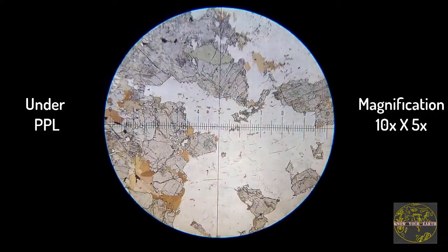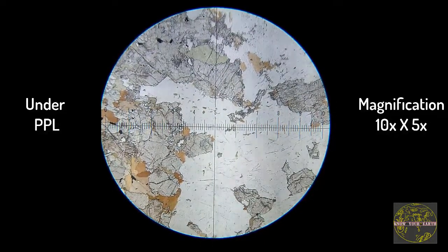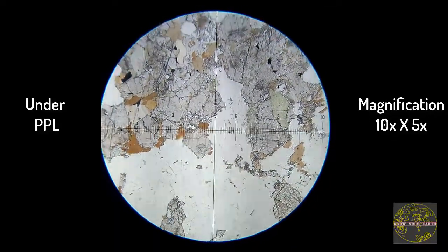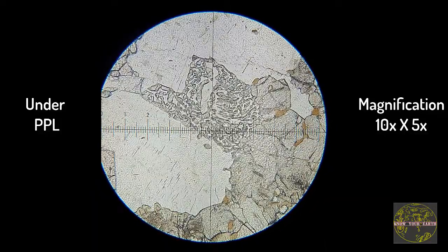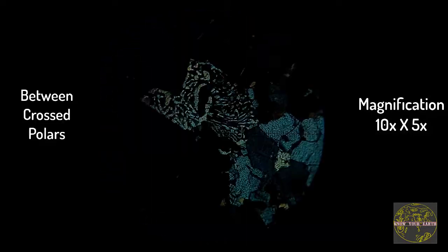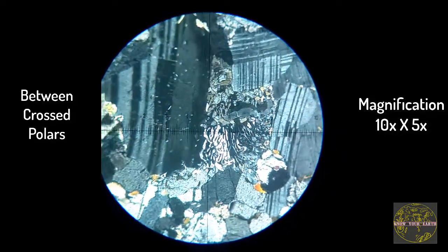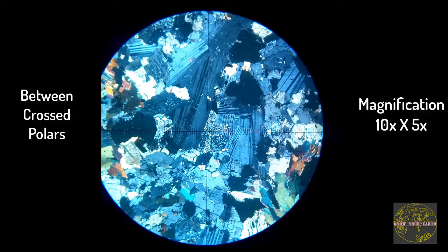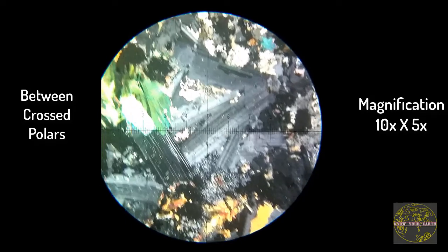This thin section is the plutonic equivalent of basalt. Here the grain size is the coarsest among the three varieties, as deep-seated magmas take time to cool down. The essential minerals are again pyroxene and plagioclase. Here the pyroxene grains are seen surrounded by biotite, which indicates a reaction between the pyroxene and the residual liquids while cooling. The common textures associated with gabbro are hypidiomorphic, equigranular, and reaction texture.